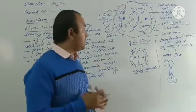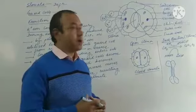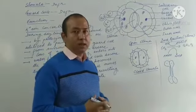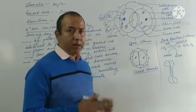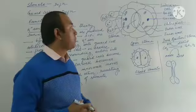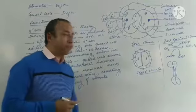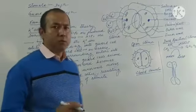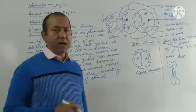As a result, the guard cell swells and becomes turgid. The outer wall becomes more convex and the inner walls start moving apart from each other, resulting in the opening of the stomata. This is how the stomata opens according to the potassium ion concentration theory.